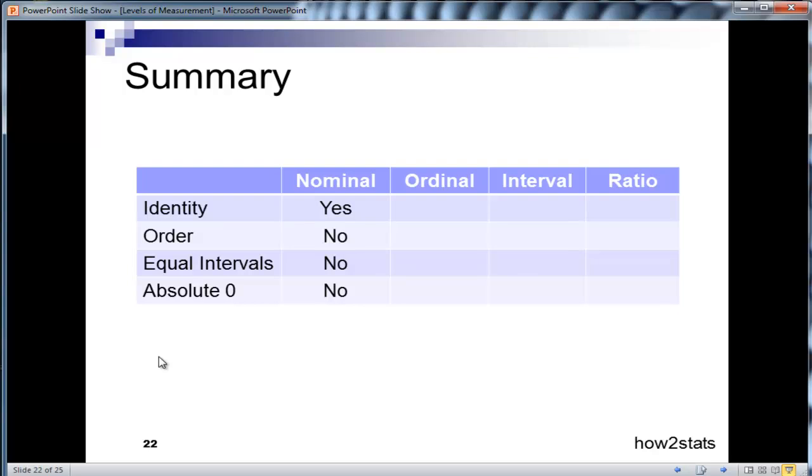Some people argue that because nominal only has the property of identity, which is verbal labels ascribed to categories, it's not really a scale, because it doesn't scale objects along any sort of continuum. But in Stanley Stevens' framework, it's considered one of the levels of measurement.